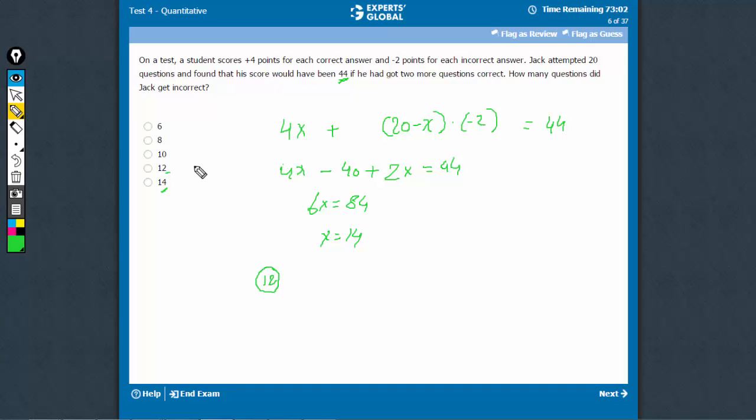12 is also not the right answer because the question is not asking the number of correct attempts, the question is asking the number of incorrect attempts. So if 12 were the correct attempts, the answer should be 20 minus 12, which is 8.